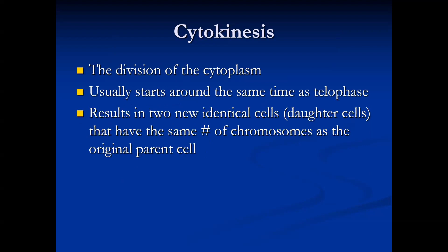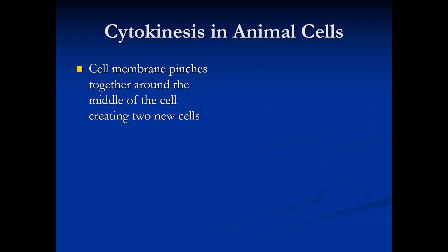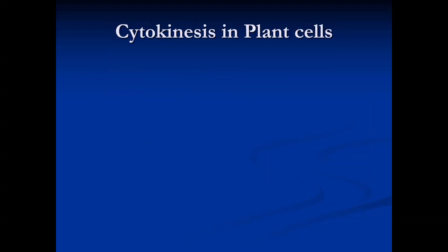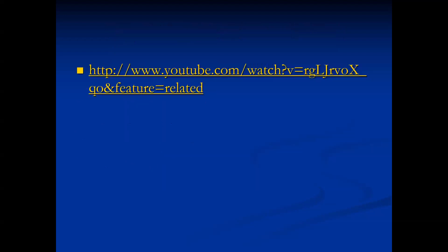In cytokinesis in animal cells, the cell membrane pinches inward around the middle of the cell, splitting it into two new cells. Each daughter cell ends up with an identical set of chromosomes and about half of the organelles. In plant cells, a cell plate forms down the center of the cell and gradually develops into a membrane, with new cell walls forming around each new cell.